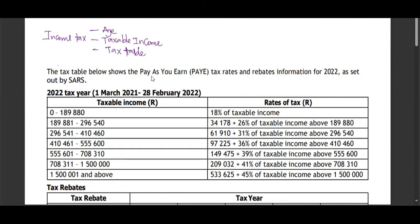This is what we call the tax table. It has brackets — one, two, three, four, five, six, and seven. Make sure the taxable income is always annual.